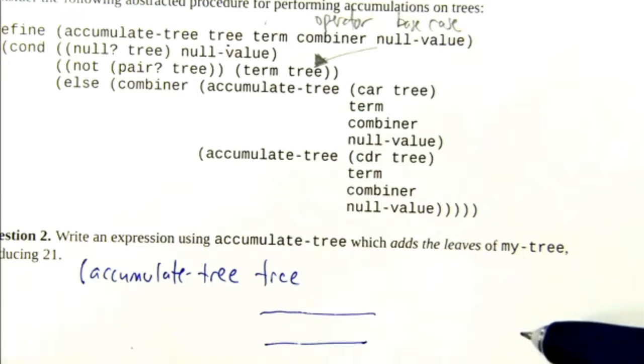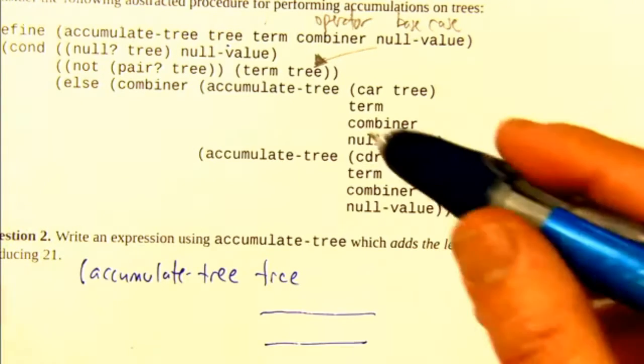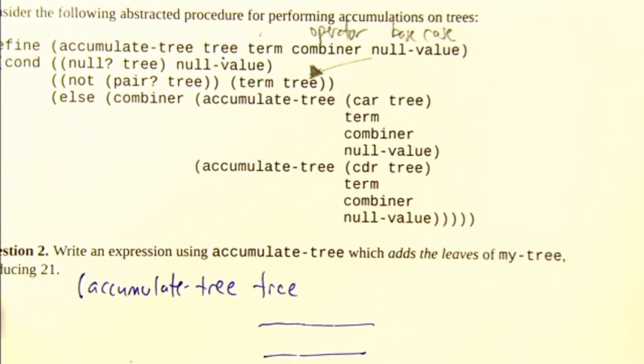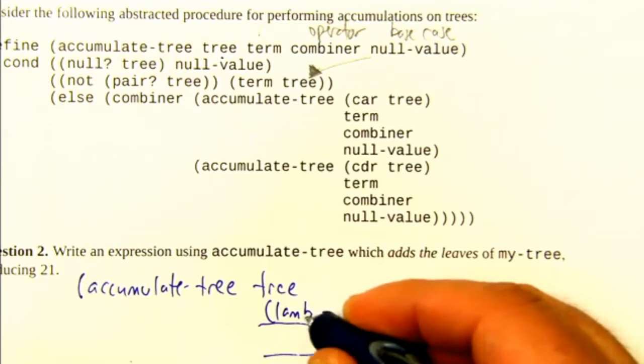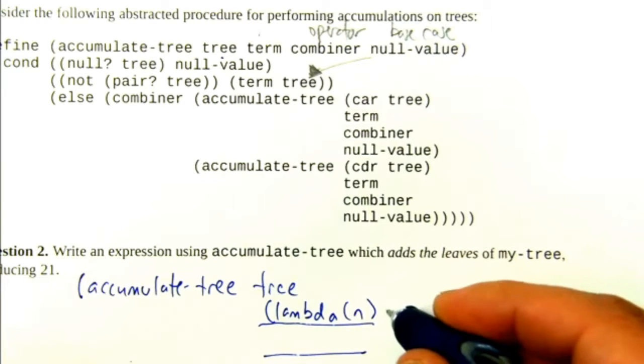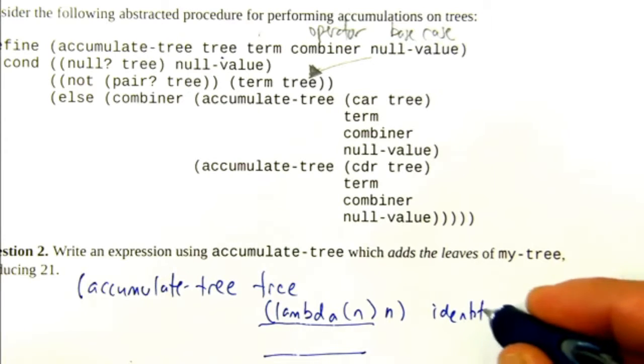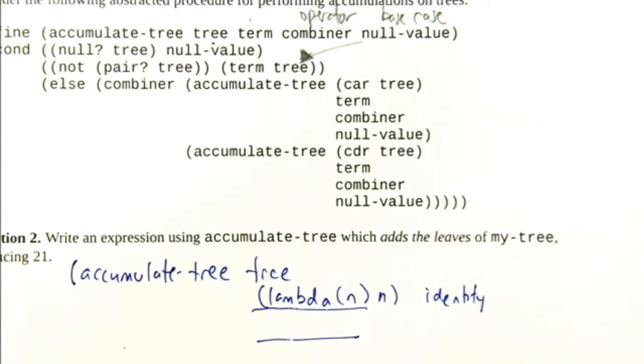Okay, so what's the second term? The function which transforms the term. We're going to add up all the leaves. So it's just like some tree where when we get down to a leaf, we give it back. So it's the identity function. We can write lambda of n, n, or you could say identity, which is equivalent to that. It's a function that accepts a number and then produces that same number.